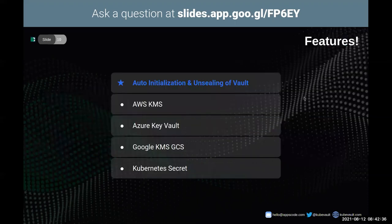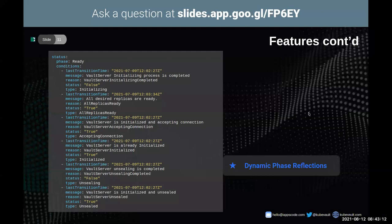Let's dive into the features of KubeVault. Who would want to manually initialize and unseal a Vault server using a secret key? KubeVault provides auto-initialization and unsealing of Vault. You may choose your preferred KMS provider, or even use a Kubernetes secret to store your Vault root token and unseal keys, and KubeVault will automatically unseal your Vault. In this demo, we're going to use Google KMS GCS. KubeVault also provides dynamic phase reflection, which is very helpful for seeing the different states of Vault. The KubeVault phases are: initializing, sealed, unsealing, critical, ready, and not ready.